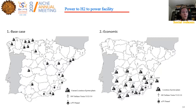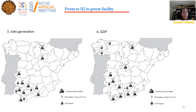We consider the base case where facilities are located where current thermal or nuclear power plants exist, and first we optimize the economics, locating power plants with no additional constraints — the system basically selects locations to the south. If we optimize for the generation of jobs, there are two important results: first, there is no installation of wind turbines, and second, we favor the south-west part of the country, apart from small facilities to the north.